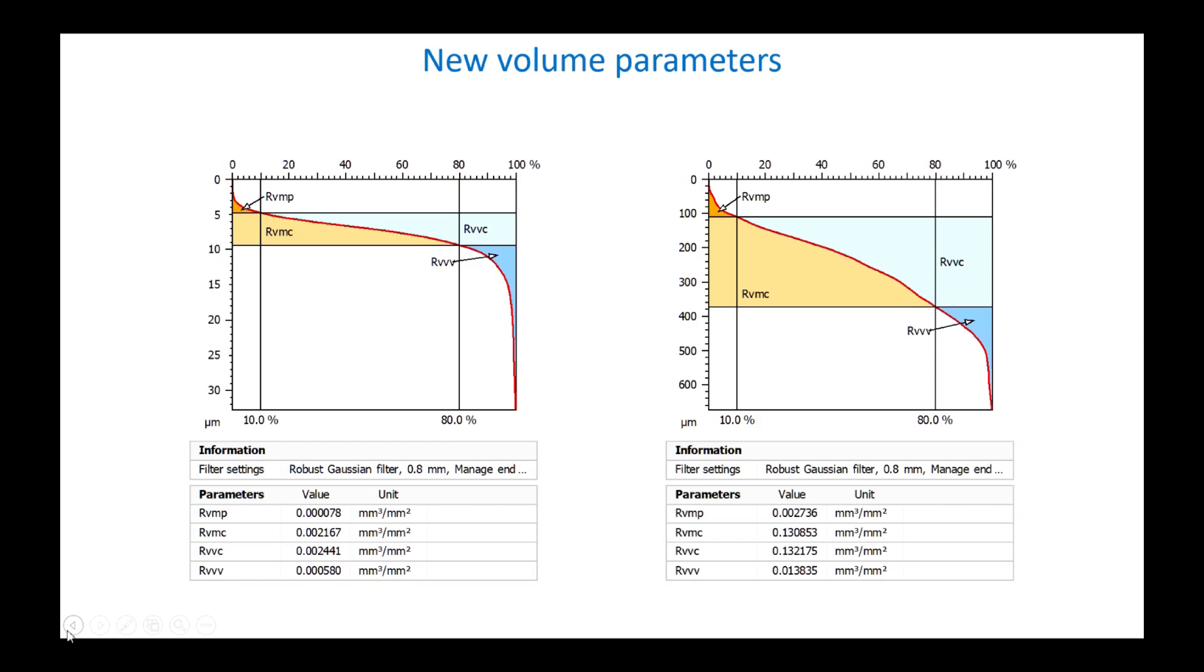The volume parameters, which had been introduced in the surface standard ISO 25178-2, were adapted to profiles to quantify void volume or material volume of the different sections of the Abbott curve. They offer a more flexible alternative to RK parameters, which are limited to stratified surfaces.